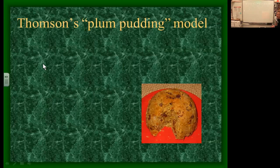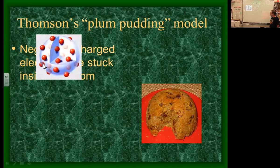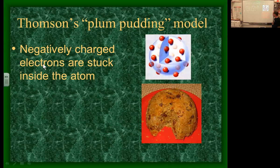So what did Thompson discover? Thompson discovered that all elements have electrons — at least all the ones he tested in gaseous form. At that point, all we knew about atoms was that there's a negative particle inside called the electron. He came up with something called the plum pudding model — basically an atom with little electrons stuck inside it, like plums in a pudding bread. This was the first model of the atom from Thompson: negatively charged particles stuck inside the atom.